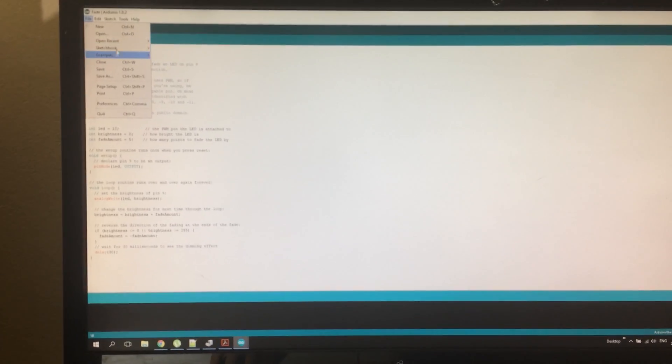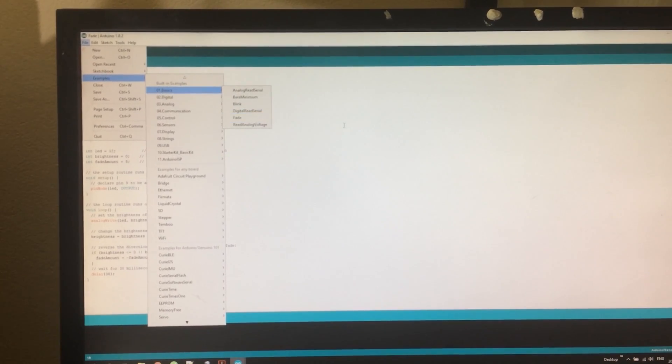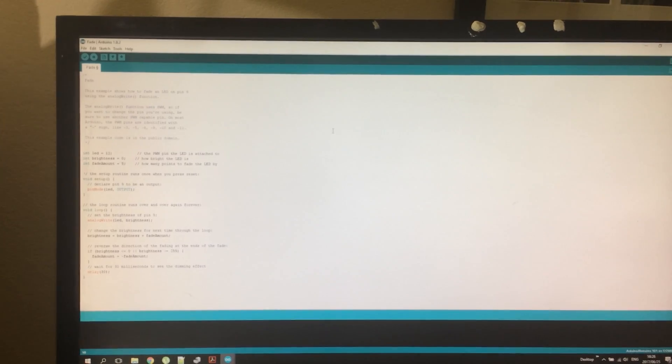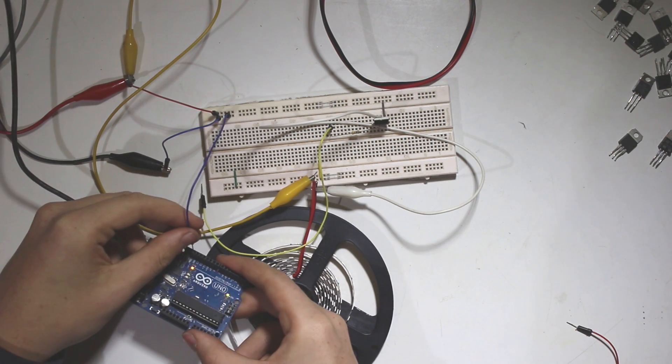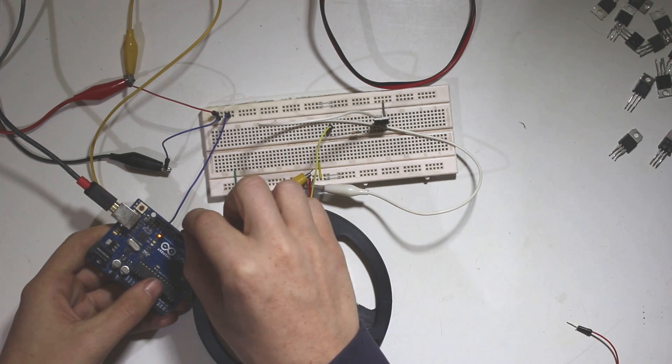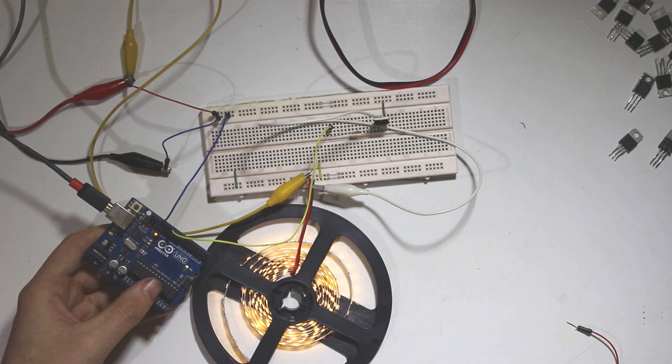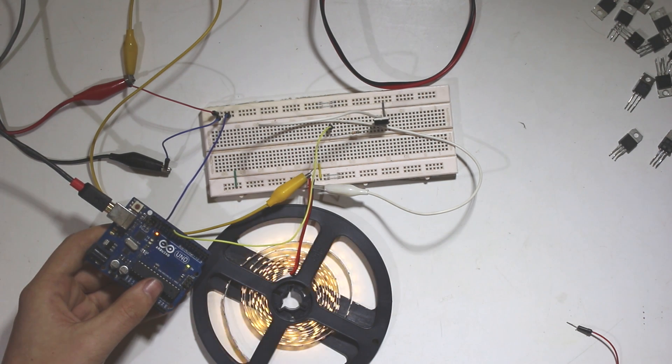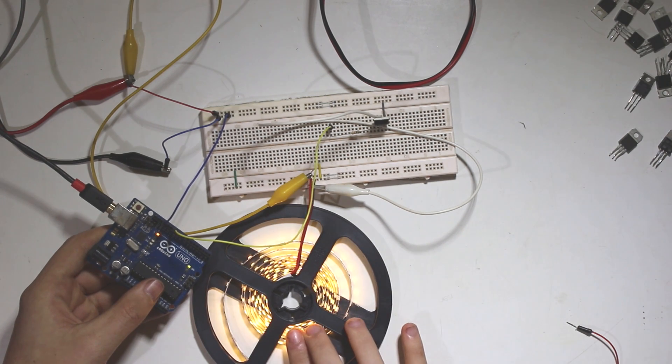So the sketch I'm uploading is under examples, basics, fade. So not only can we turn the LED strip on and off, but we can also fade it via PWM. I'll connect your Arduino via USB, connect the grounds, and connect pin 11, and upload the sketch. As you can see, it dims the LEDs perfectly.